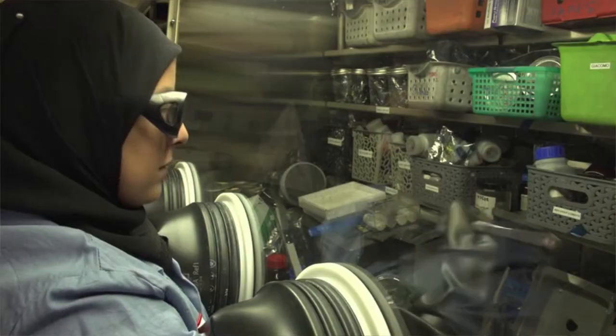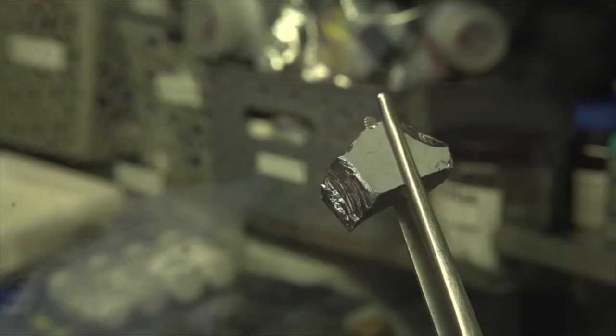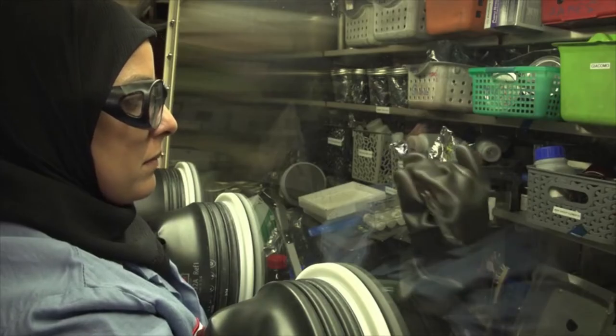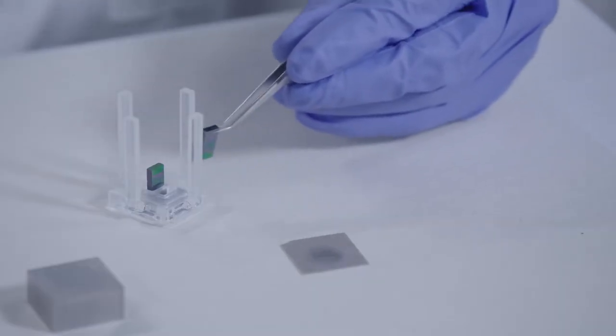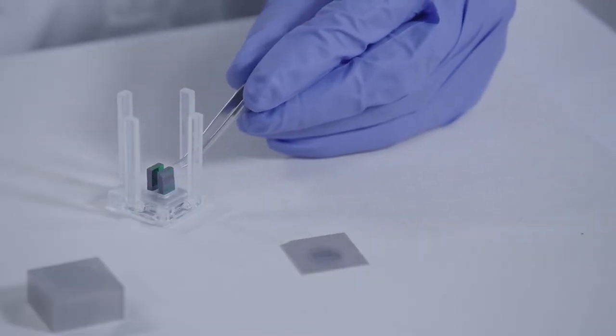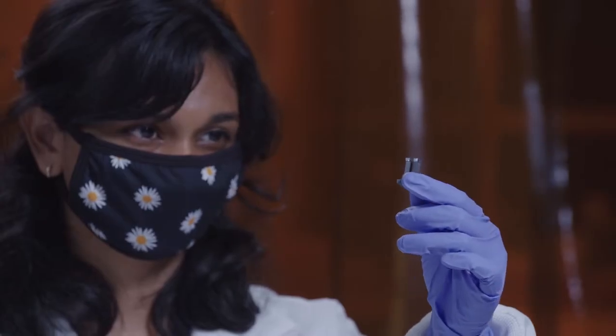Some of the specific materials used in RTGs are selected because they can conduct electricity as well as maintain a hot and a cold side. Seebeck used copper and bismuth in his experiments. Today we use lead telluride and silicon germanium.